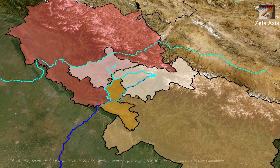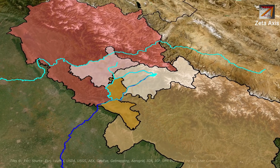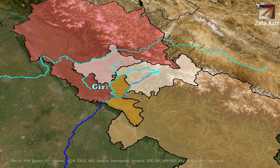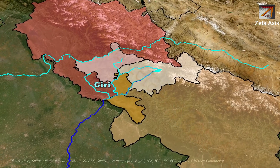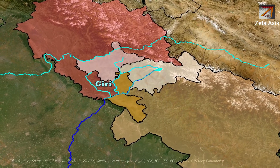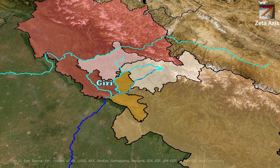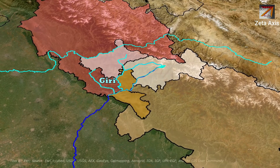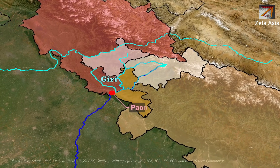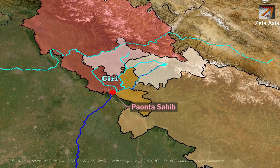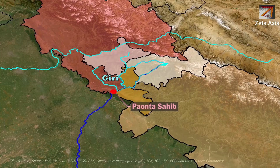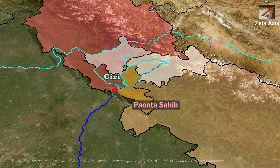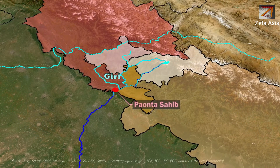The Yamuna river flows through Dehradun valley where another river, Giri from Himachal Pradesh, joins Yamuna. The Yamuna river continues to flow along the Uttarakhand and Himachal Pradesh boundary and passes through Ponta Sahib, a religious place for Sikhs. After Ponta Sahib, the Yamuna river cuts through the Siwaliks and enters the plain region.